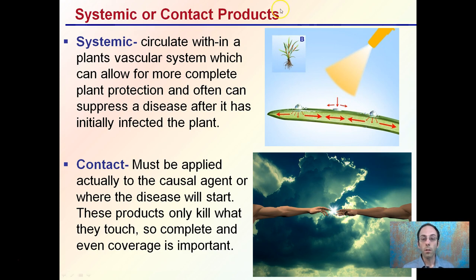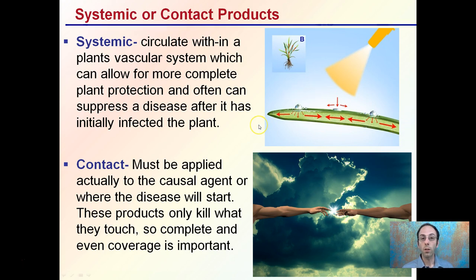Of those sprays, there are two different types: systemic and contact. Systemics circulate within the plant's vascular system — you spray it in one area and it spreads internally through the plant, allowing for more complete plant protection and the ability to suppress disease after initial infection. However, because they enter through the plant, systemics are typically discouraged for cannabis production, as they can get into the buds and leave internal residues which, when smoked or brought to high temperatures, can become volatiles.